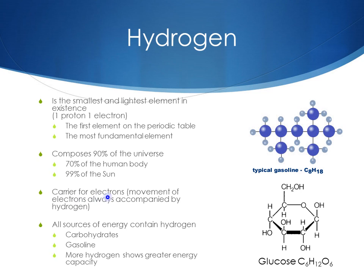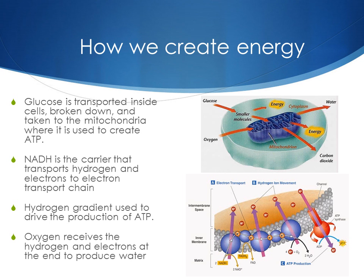Hydrogen is also the carrier for electrons inside the body, and any movement of electrons is usually accompanied by hydrogen. All sources of energy also contain hydrogen, such as carbohydrates and gasoline. Typical gasoline contains 18 hydrogens, and glucose, which is a carbohydrate that's very important in our body, contains 12 hydrogens. So you can see that more hydrogen shows greater energy capacity. So how do we create energy?